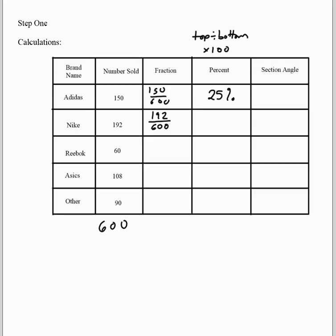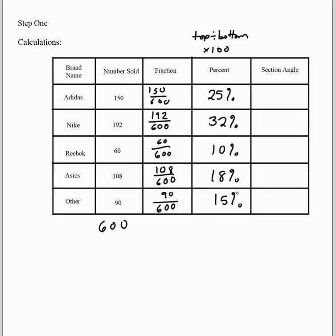Notice I don't care that my fractions are not simplified, because I'm trying to turn them into percents — it really doesn't matter if they are simplified. I'll get the same percent when I do the calculation: Nike gives 32 percent. I do the same for Reebok and get 10 percent, then for A6: 108 divided by 600 times 100 gives 18 percent. Other gives 15 percent. Your percentages should add up to a total of 100.